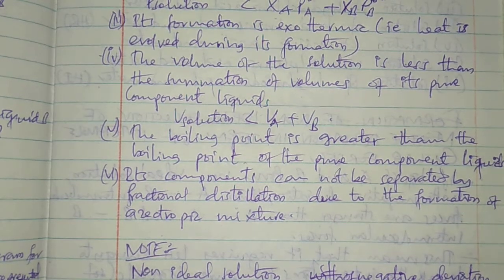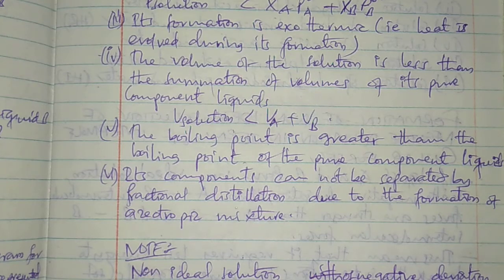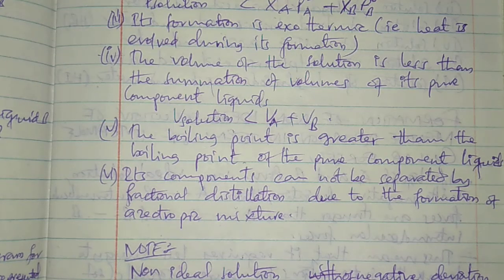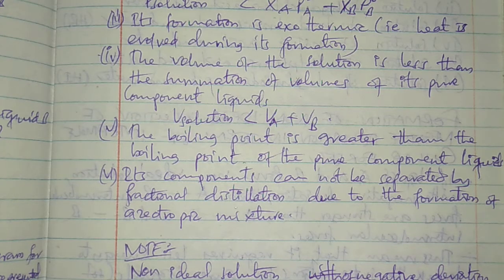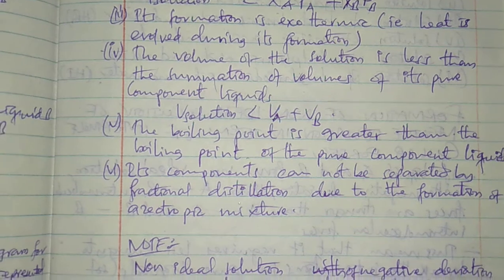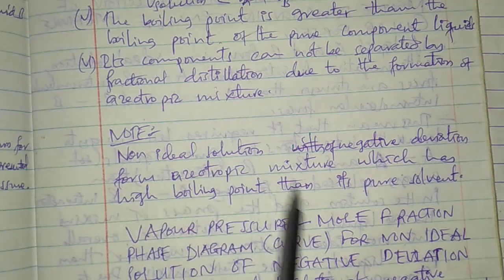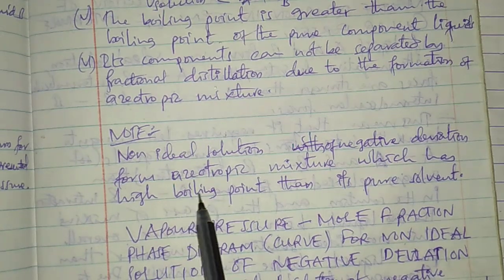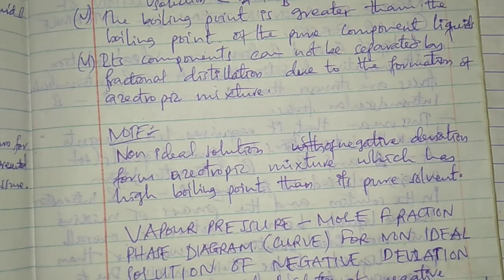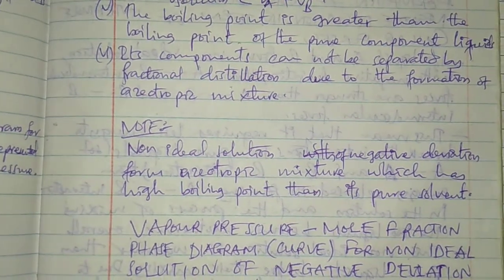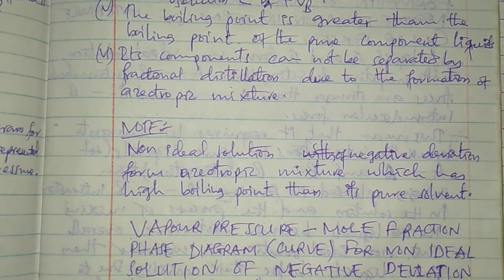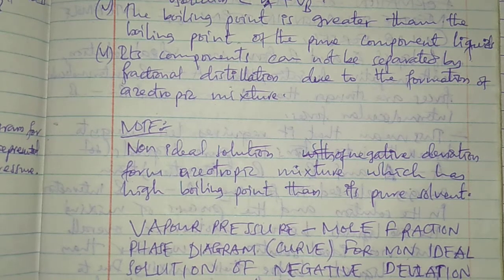This feature applies to all non-ideal solutions, whether of negative or positive deviation - components cannot be separated by fractional distillation due to the formation of azeotropic mixture. Non-ideal solutions with negative deviation form an azeotropic mixture which has a higher boiling point than its pure solvents, because of the strong intermolecular force of attraction in the solution compared to the intermolecular forces in the pure liquids.